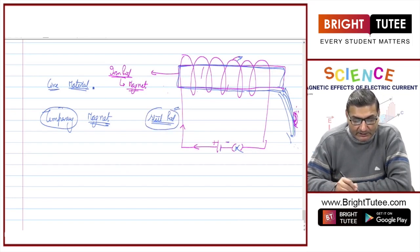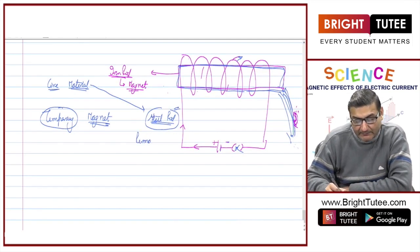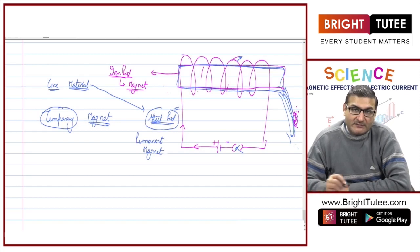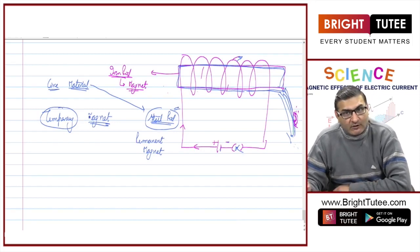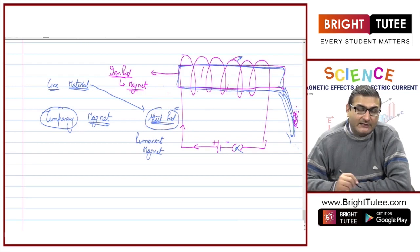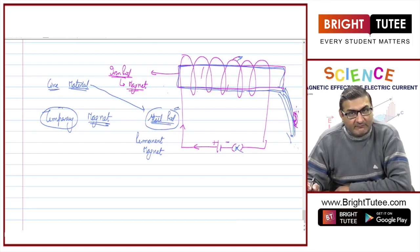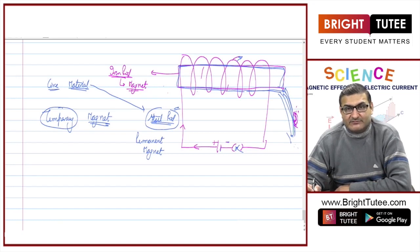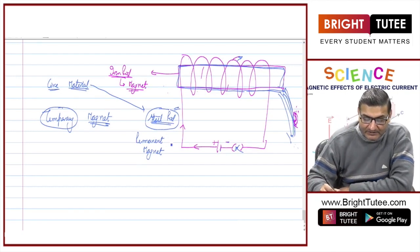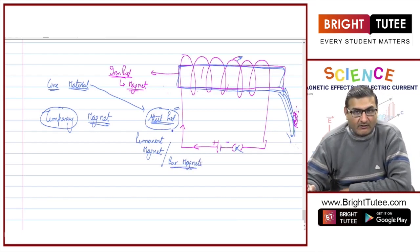By taking the core material to be steel, we have converted it into a permanent magnet. There is a difference between the properties of iron and steel. The iron rod absorbs magnetism while the switch is on and loses it when the current goes off, but the steel rod, once it gains magnetism, doesn't lose it. This is how all permanent magnets are made — by taking a steel rod as the core material.